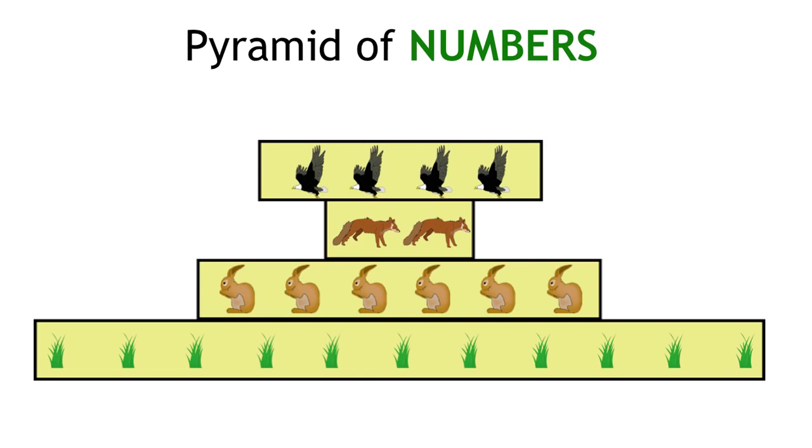As you can see in this example, thousands of blades of grass are eaten by lots of rabbits. That then feeds very few foxes. These foxes will then feed a larger number of eagles. The more organisms there are, the wider the bar is.